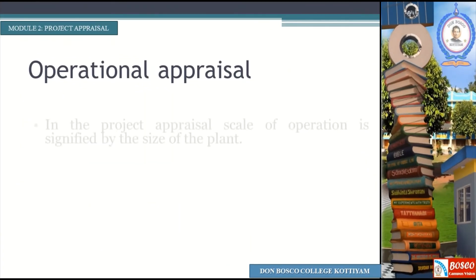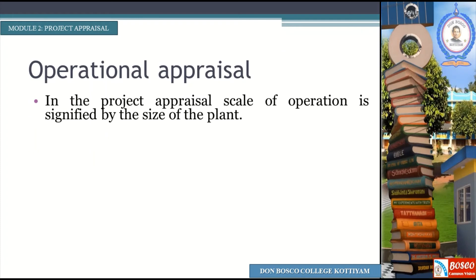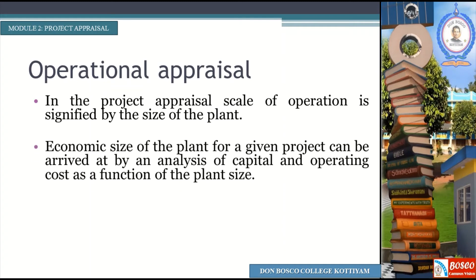Next, Operational appraisal. In project appraisal, the scale of operation is signified by the size of the plant. The scale of operation of a project is decided by the size of the manufacturing plant. The economic size of the plant of a given project can be arrived at by an analysis of capital and operation cost as a function of the plant size.